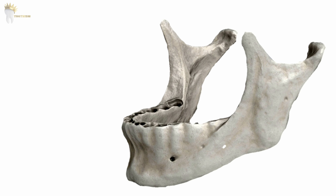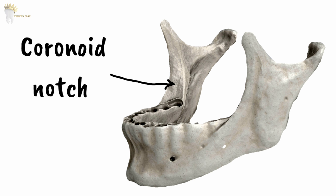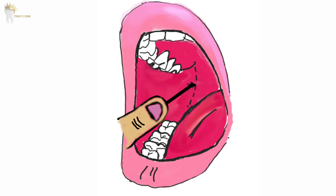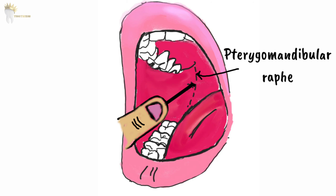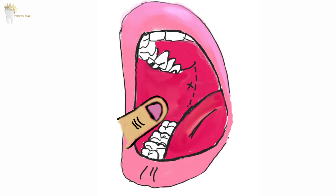For the height of injection, first palpate the coronoid notch — the area of greatest depth of the anterior border of the ramus. Imagine a line extending posteriorly, bisecting the fingertip in the coronoid notch to the deepest part of the pterygomandibular raphe, parallel to the occlusal plane of the mandibular molars. In most patients this line is about 6–10 mm above the occlusal plane. When the mouth is wide open, the pterygomandibular ligament is tensed and becomes a visual reference; the injection point should be lateral to this line. The thumb on the coronoid notch can pull tissues laterally to improve visibility.